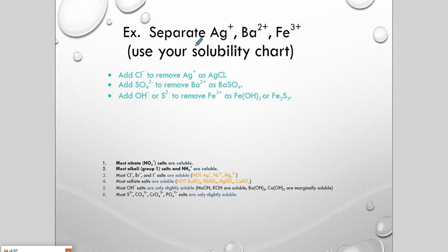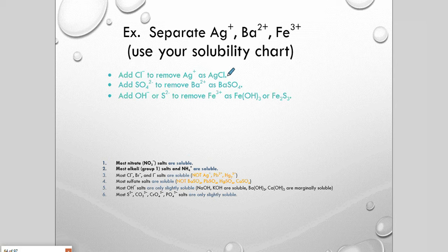First, we add chloride ions — for example in the form of sodium chloride — to precipitate silver chloride. We then filter it out. The remaining solution contains only barium and iron(III). We then add sulfate — for example sodium sulfate — to precipitate barium sulfate, which we filter out again. Finally, we add hydroxide or sulfide to bind the iron(III), then filter that out, having separated all three sets of ions from the solution.